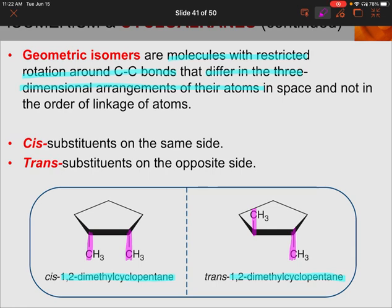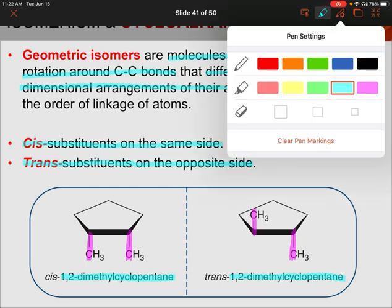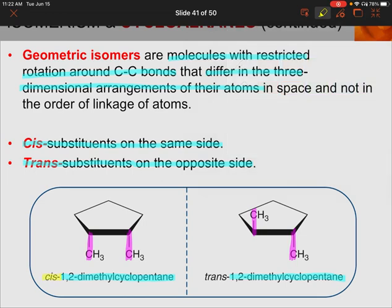To tell these two molecules apart, we use the terms cis and trans. Cis-substituents or groups are on the same side of the molecule. Trans-substituents or groups are on the opposite side. So the first structure is considered a cis geometry because the two groups are on the same side — they could also both be pointing up, as long as they're both on the same side. The other structure is a trans structure because the groups are on opposite sides. The order of the atoms is the same — both groups are on carbons 1 and 2 — but the geometry is different. So these are geometric isomers.